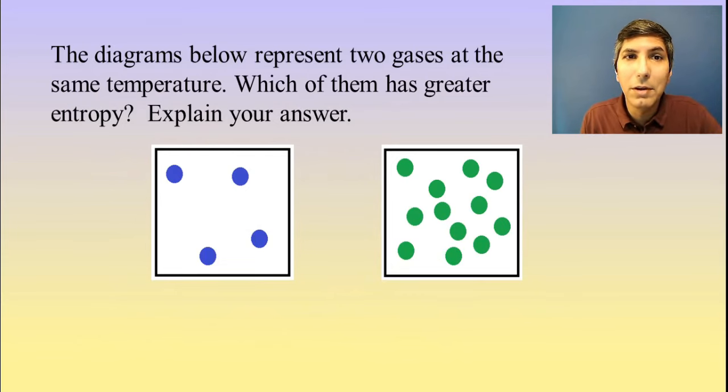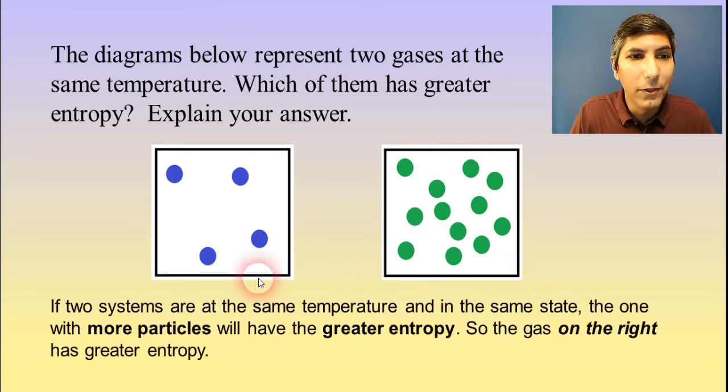So let's take a look at this example. The diagrams below represent two gases at the same temperature. Which of them has greater entropy? Explain your answer. Well, they're both gases. So we can't say that one is a gas, one is a solid. That's not going to answer the question. And they're at the same temperature, so temperature doesn't help. So the tiebreaker in that case is the number of molecules. And so as you can see, the picture on the right here, the one that has the green molecules, has a much larger number of molecules than the state on the left. And so if two systems are at the same temperature and in the same state, the one with more particles will have the greater entropy. So the gas on the right has greater entropy.